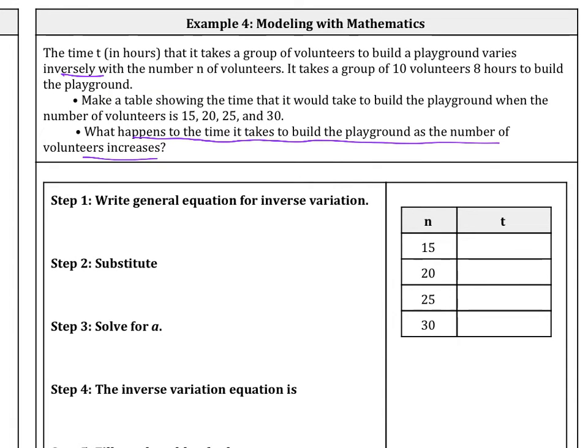So we need to write our general equation for inverse variation. Now generally it's y equals a over x. But what it's saying is time, okay? So time t in hours equals a over the number of volunteers, because it varies inversely. The more volunteers we have, the less time it's going to take.